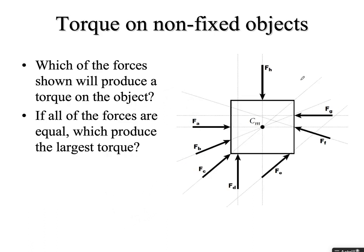Which of these forces, if they're all equal, produces the greatest torque on this non-fixed object? The correct answer is this one — because r-perpendicular in this case is by far the largest.